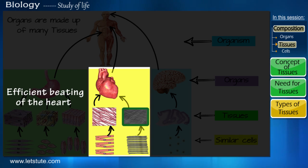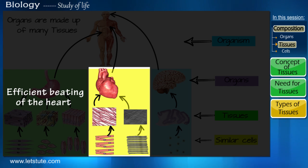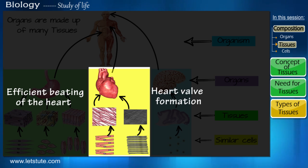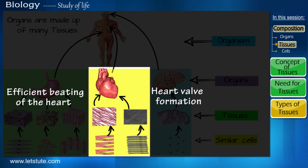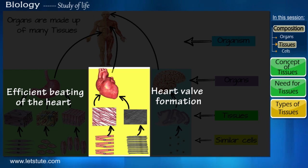The second type of tissue has a different group of cells which come together to perform the function of forming the valves or the non-beating parts of the heart. These two tissues together help in the efficient pumping of blood by the heart.